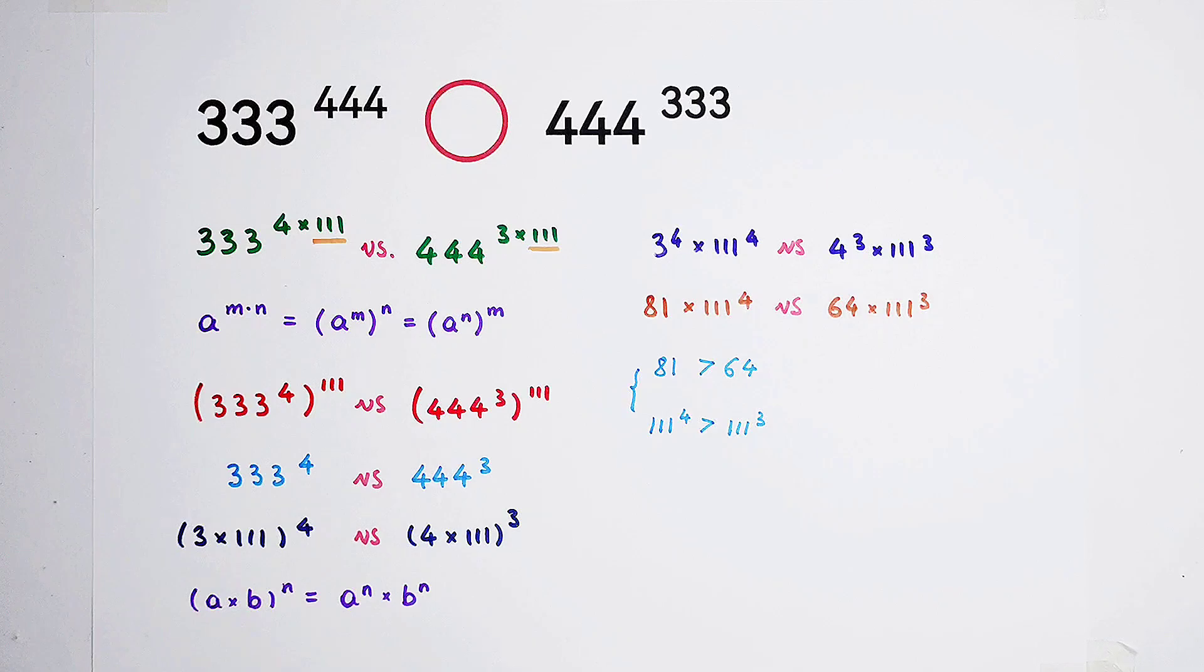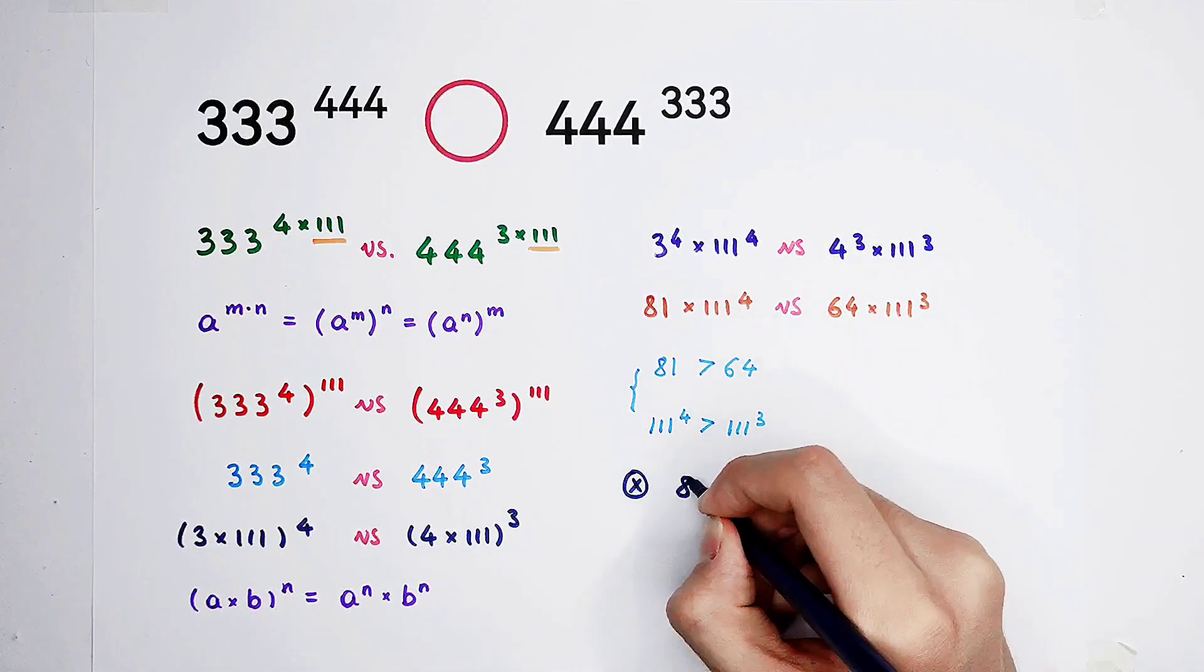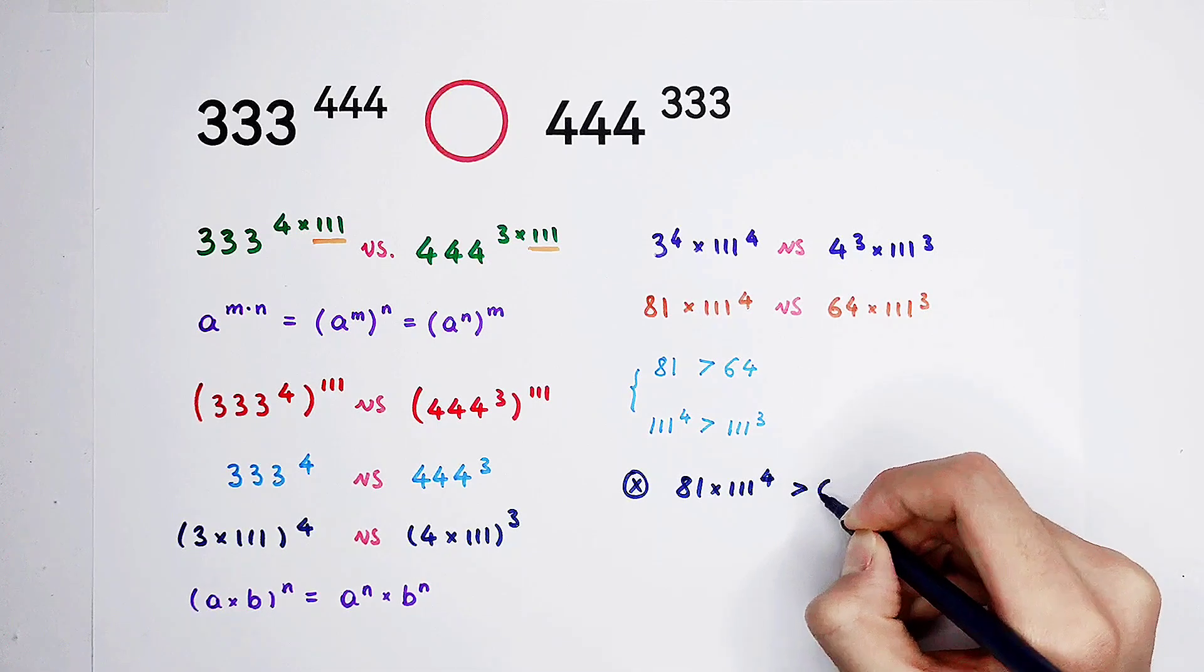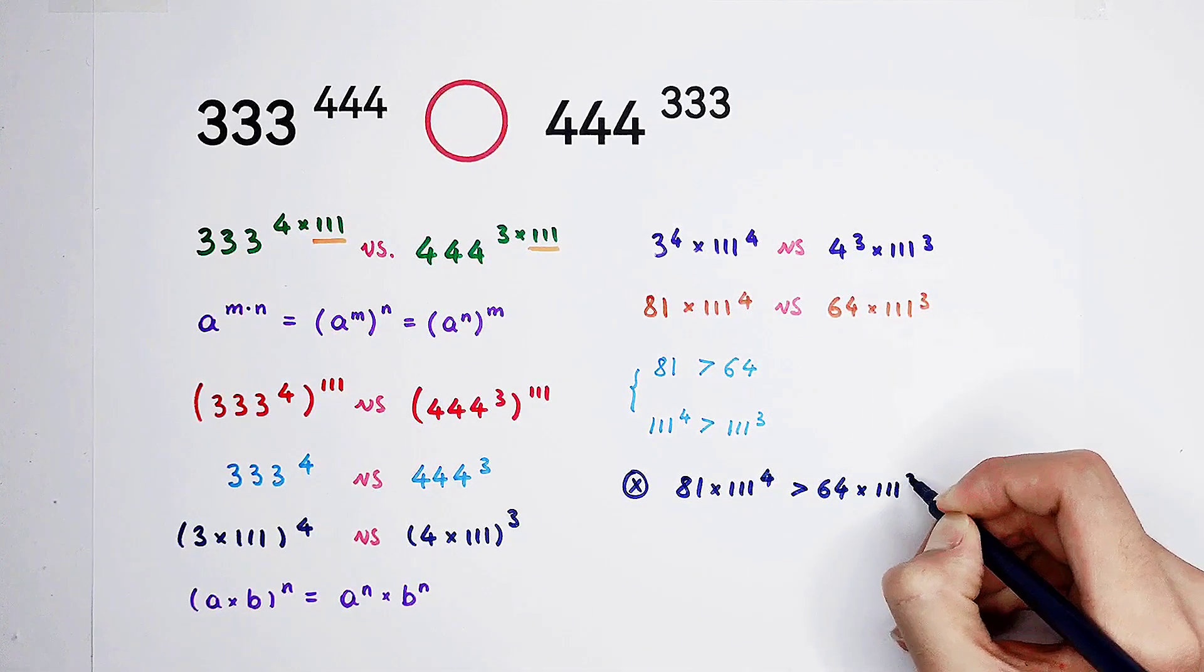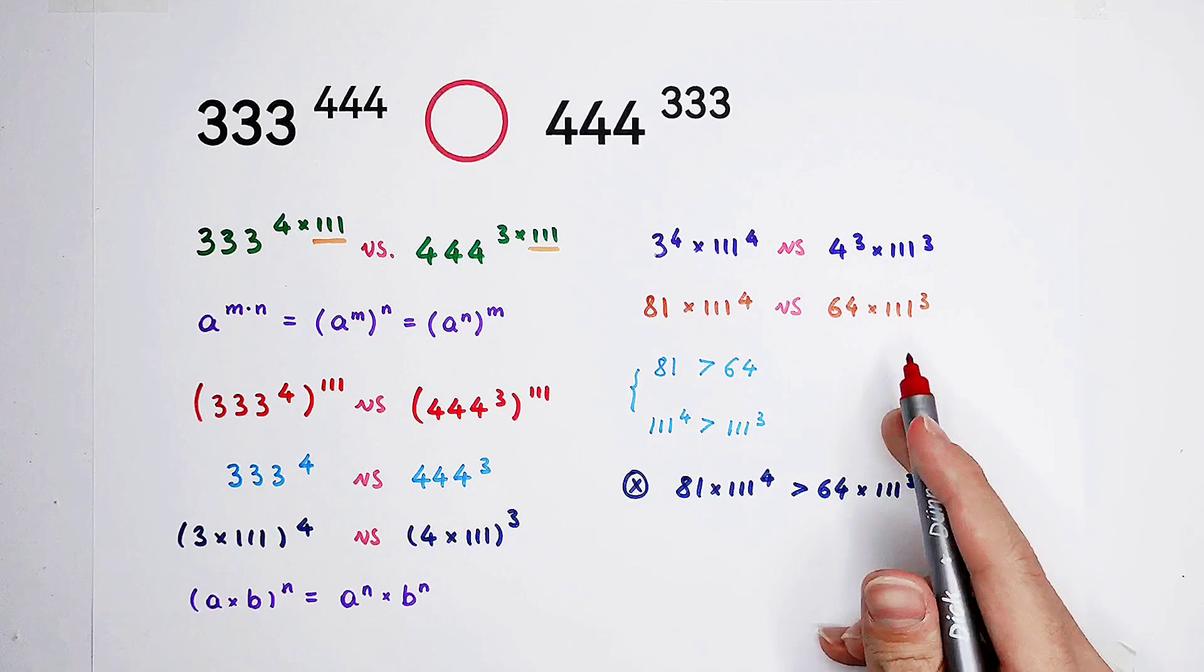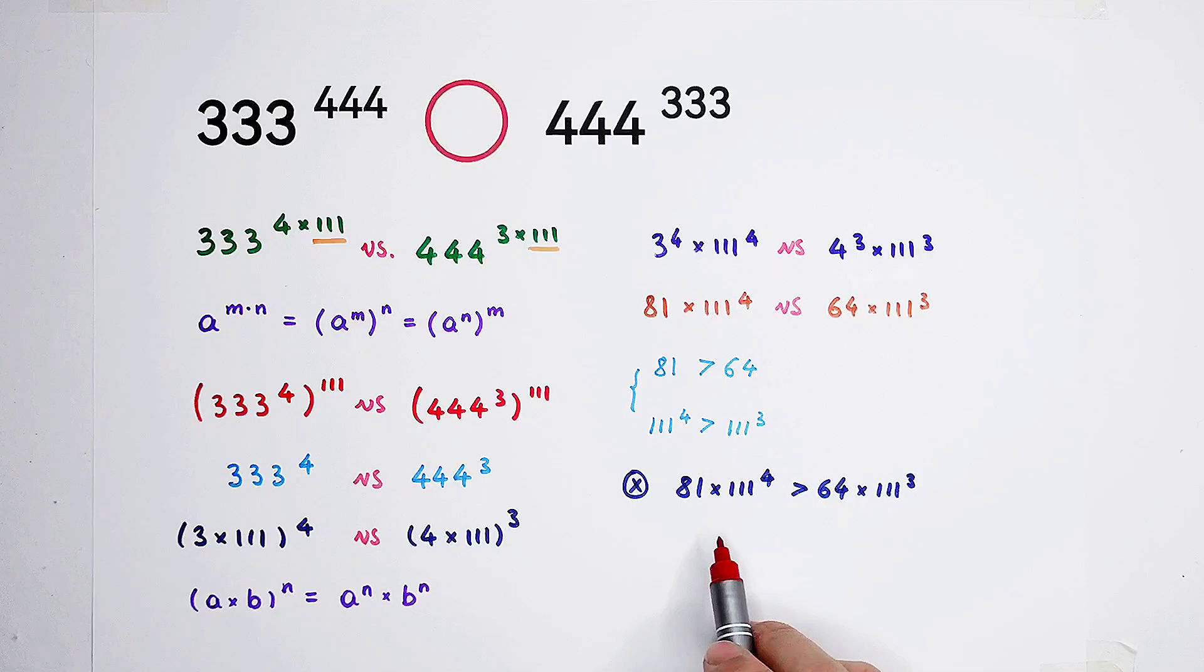From these two inequalities, if we multiply them together, then we can get 81 times 111 to the power of 4 is greater than 64 times 111 to the power of 3. Okay. That means we can get this. The left hand side from this inequality is the left hand side here, and the right hand side from this inequality is the right hand side here. So that means 81 times 111 to the power of 4 is greater than 64 times 111 to the power of 3.